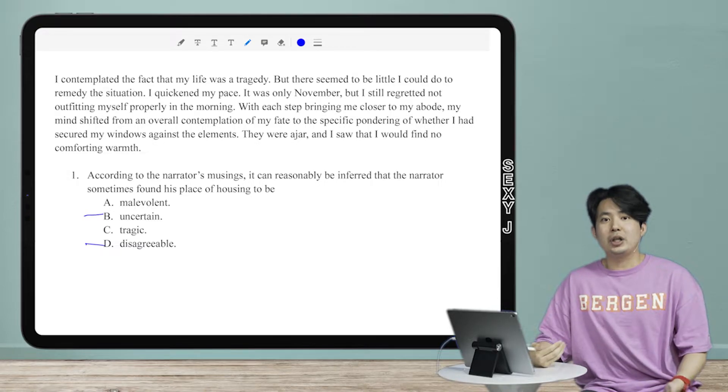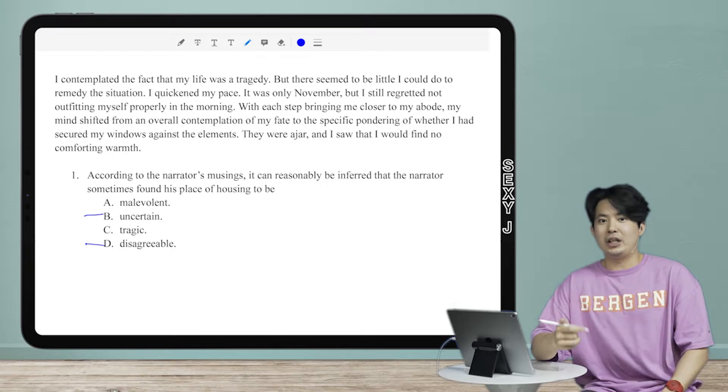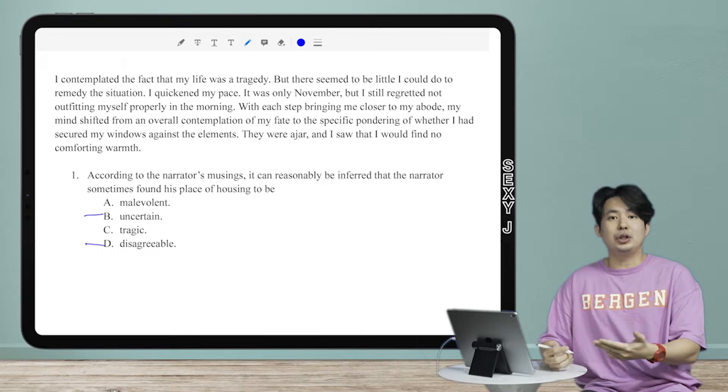So why are weaker answers better? Because they're easier to justify. Let's say somebody is super upset, right? He is breaking the whole house down, he's punching walls. Could you say that he is furious? Of course.